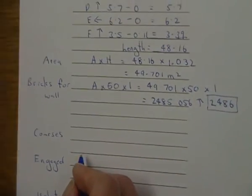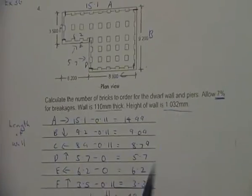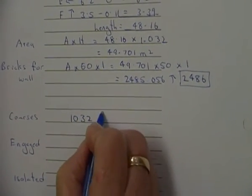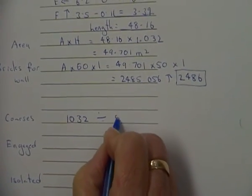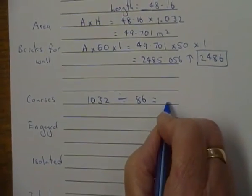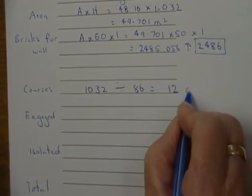Okay, so now with the courses we need the height of the wall. So this one here I'm going to leave it in millimeters because I'm going to divide by millimeters 86. So when I do that I'm going to get number of courses is 12. Okay, 12 courses.